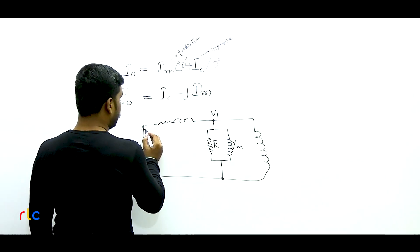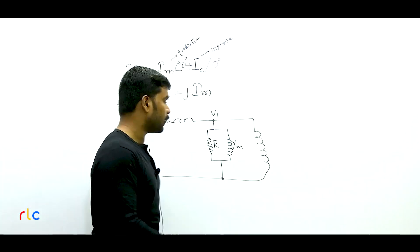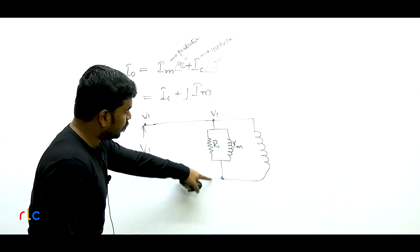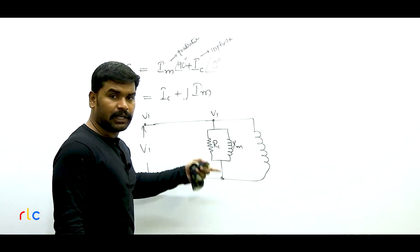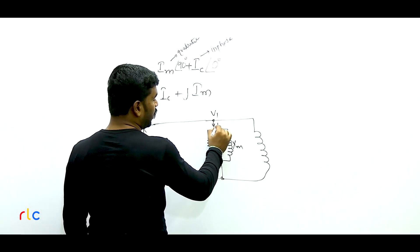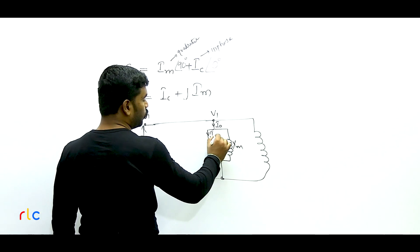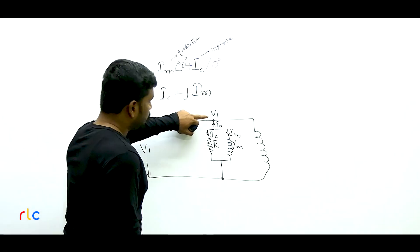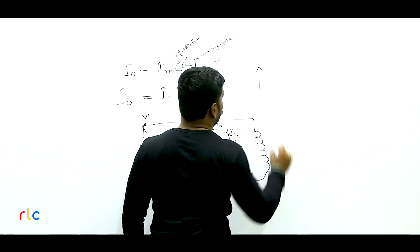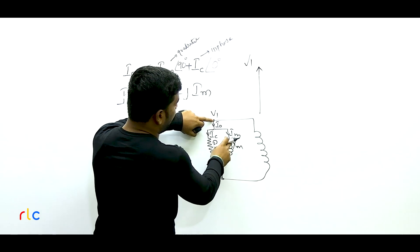Next question: A 4 kVA, 400/200 volt transformer has leakage impedance of 0.02 + j0.04 per unit. Find the leakage impedance in ohms referred to the HV side. Since the value given is per unit — not actual ohms — it is the same on both LV and HV sides. The actual impedance = per unit value × base impedance. Base impedance on HV side: Zb = Vb² / Sb = (400)² / (4000) = 160000 / 4000 = 40 ohms.